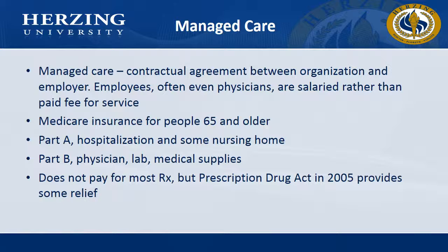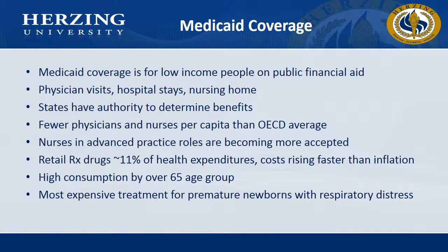Again, this is managed care in the United States, but is not necessarily the same in other developing or underdeveloped countries. Medicaid coverage is for low-income people on public financial aid. Physician visits, hospital stays, and nursing homes are all part of what is covered under Medicaid. The states have the authority to determine the benefits — it is not at the national level. Nurses in advanced practice roles are becoming more accepted and are now getting qualified Medicaid numbers to provide care, meaning that their services are reimbursable under the Medicaid Act. Retail prescription drugs account for about 11% of health expenditures, with costs rising faster than inflation, and certain medications are not always covered by Medicaid.